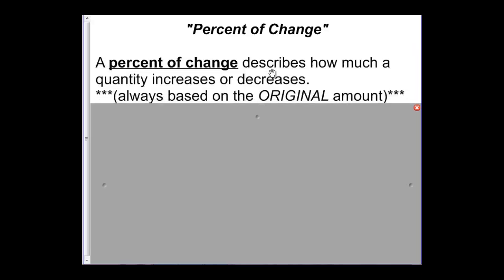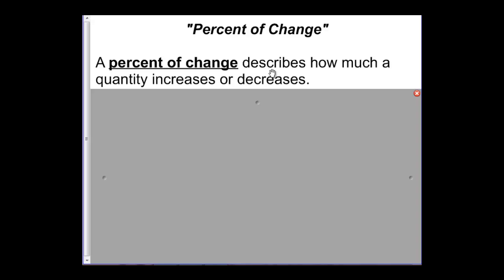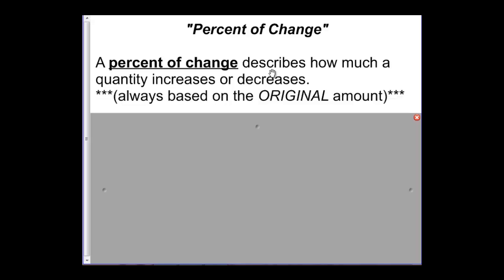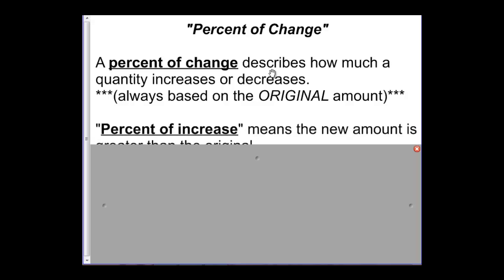Some new stuff. First thing is percent of change. A percent of change describes how much a quantity increases or decreases. We have an original amount, it changes, and we want to know what the percent of change was. If my grade went up, what was the percent of change? If an item was on sale, what was the percent of change there? One thing you want to make sure you understand is that it's always based on the original amount. Whatever that percent of change is, is the percent of the original. So that will be very important when we set up our fraction.